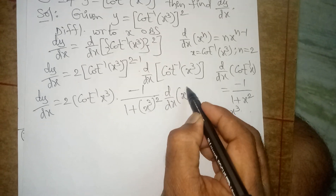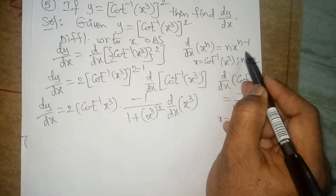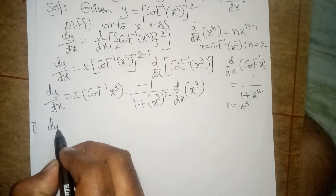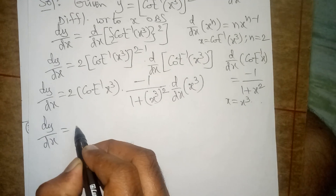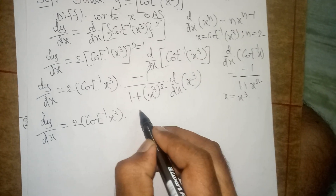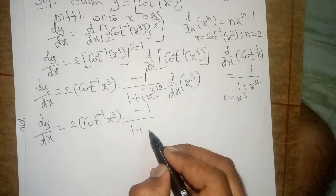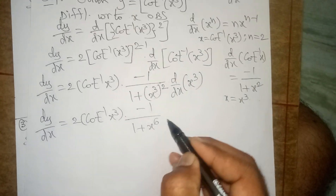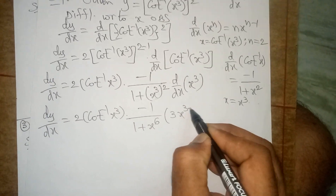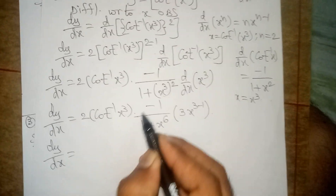Coming to the inside of the bracket, this value looks like x but not exactly x, so we apply the internal derivative — that is d by dx of x cube — which is in the form of d by dx of x power n equals n into x power n minus 1. Here n value is 3, so substituting, dy by dx is equal to 2 into cot inverse x cube into minus 1 by 1 plus x power 6 into 3 into x power 3 minus 1.